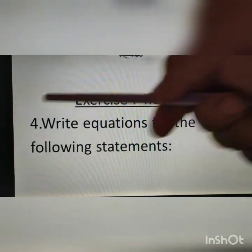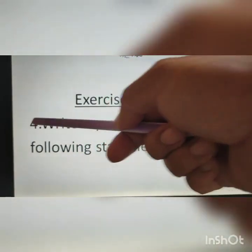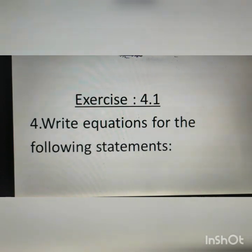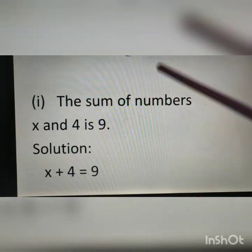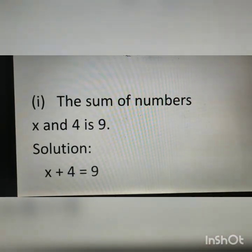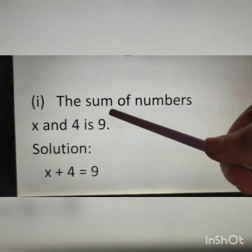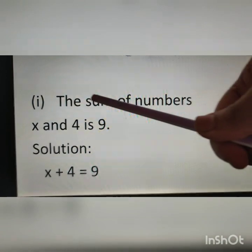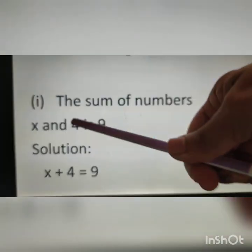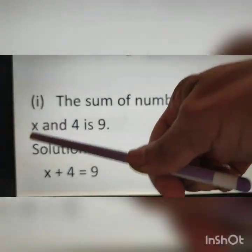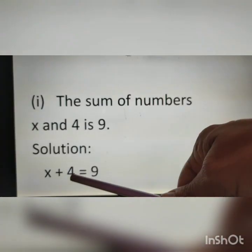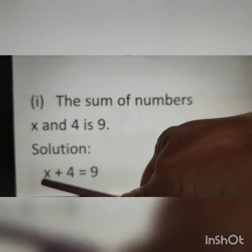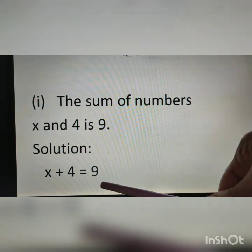Exercise 4.1, Question number 4: write equations for the following statements. Statement is given; we have to write the equation. First question: the sum of numbers x and 4 is 9. Sum of x and 4, therefore x plus 4, it is given is 9. Therefore, the solution is x plus 4 is equal to 9.